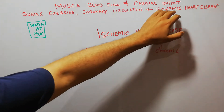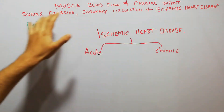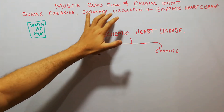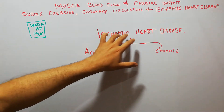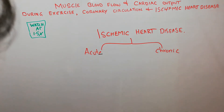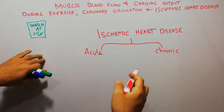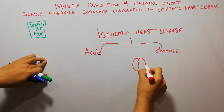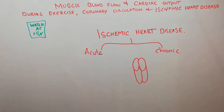Today we are going to talk about ischemic heart disease, in our chapter about muscle blood flow, cardiac output during exercise, coronary circulation, and ischemic heart disease. We have reached our final topic. Ischemic heart disease is basically any condition which leads to decreased blood flow to the heart muscles.